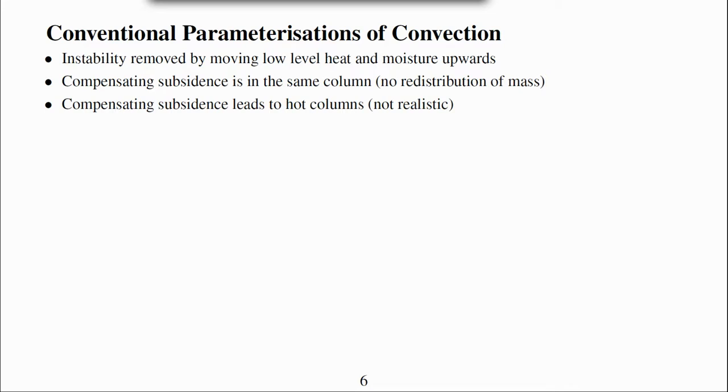Conventional convection parameterisations remove instability by moving low level heat and moisture upwards. Compensating subsidence is in the same atmospheric column which means that there is no horizontal redistribution of mass. This horizontally confined compensating subsidence leads to hot columns in the atmosphere which is not realistic.